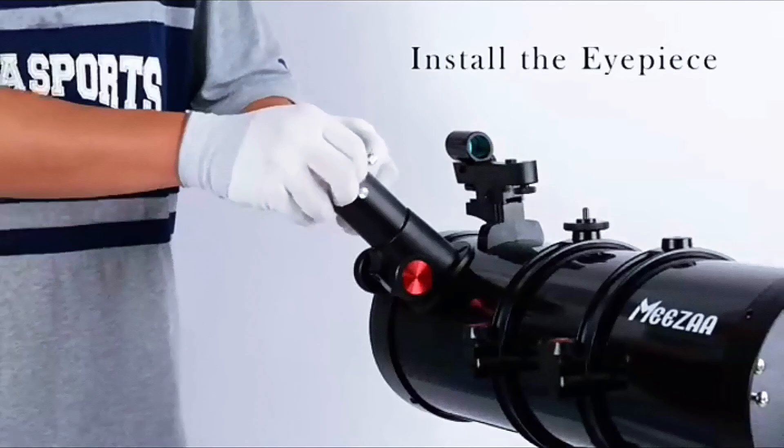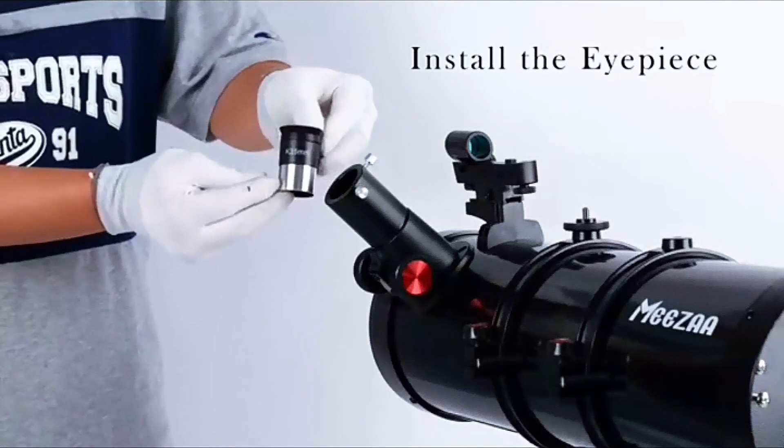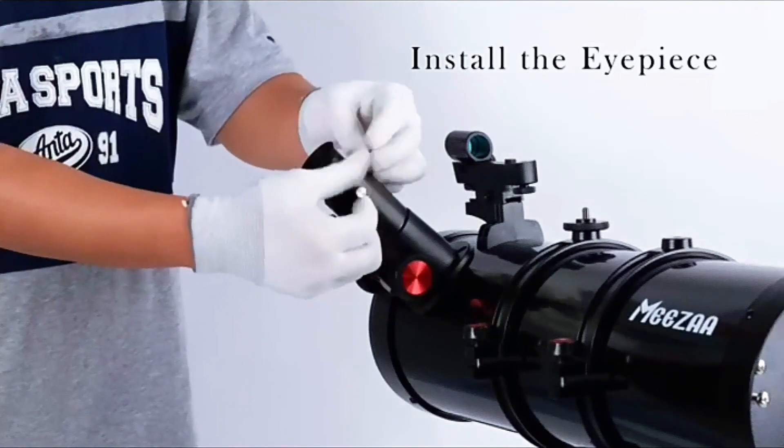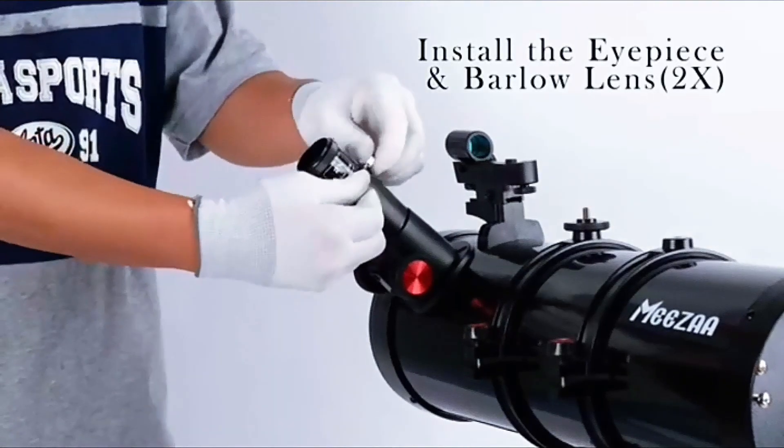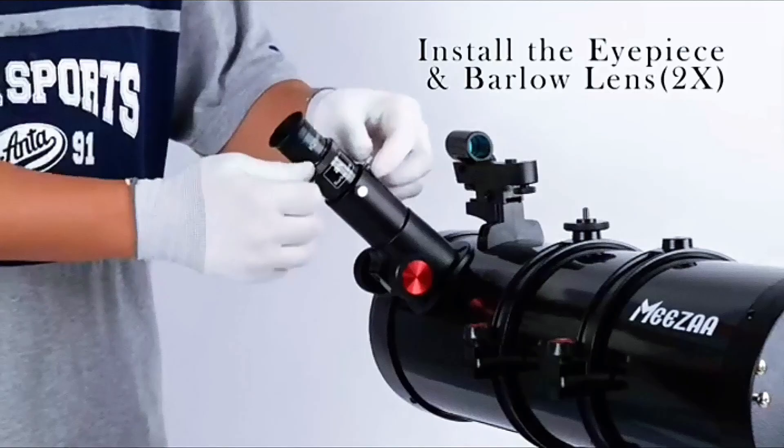Using the MESA 150M Reflector Telescope is a straightforward process. The setup is simple and the instructions are clear, making it accessible for those new to astronomy. Once set up, you can start exploring the night sky in no time.